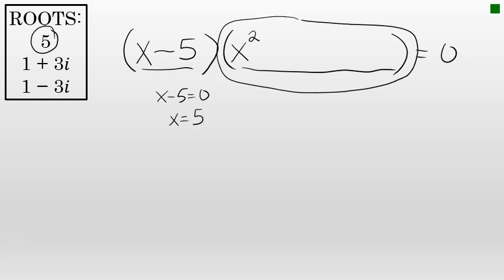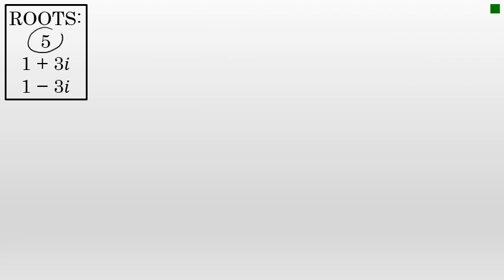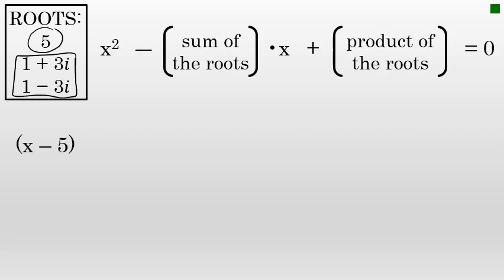The quadratic part of the equation will be a quadratic that has the two solutions of 1 plus 3i and 1 minus 3i. If I write a quadratic with those roots and multiply it by x minus 5, that gives me the cubic equation I'm looking for. A quadratic has the form x² minus the sum of the roots times x, plus the product of the two roots.